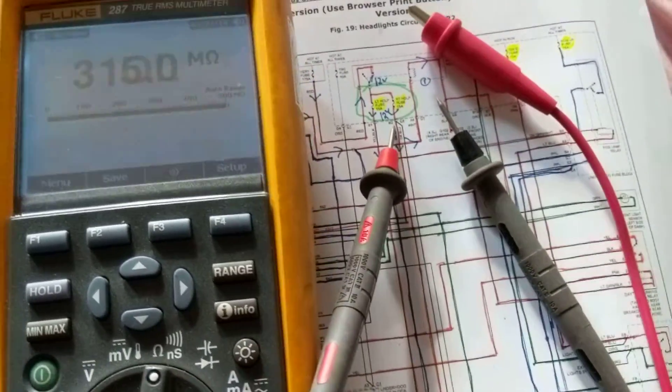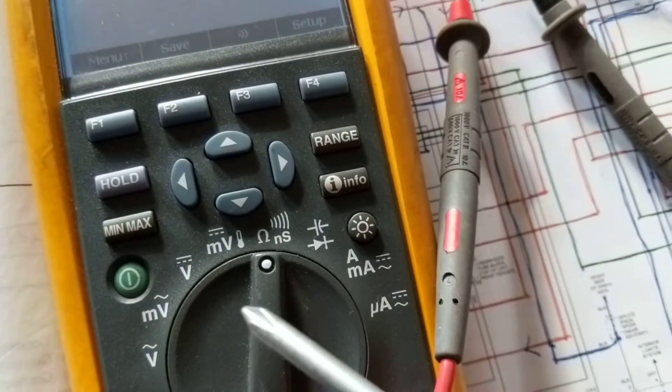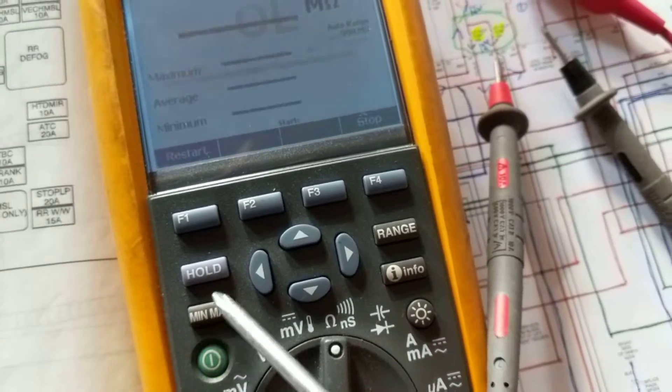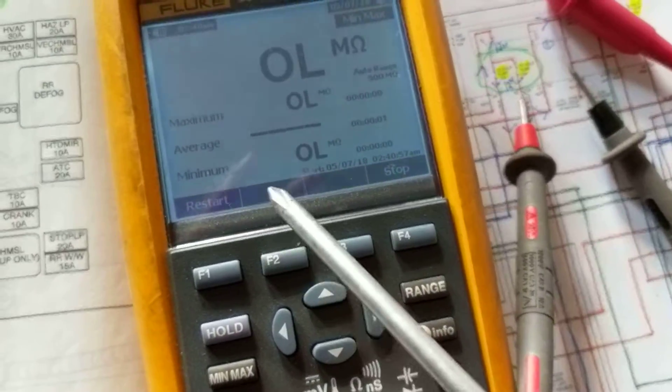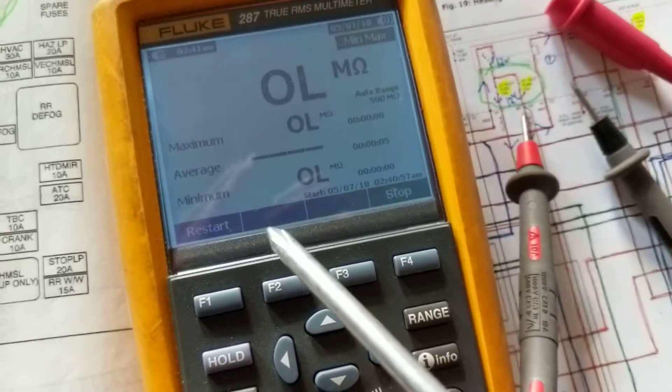Now you're going to have overload, out of limit. Now the basic functions - there's more functions on this than the other one. You have a min/max where you have, let's say, a fluctuating voltage or ohms and it fluctuates up and down.